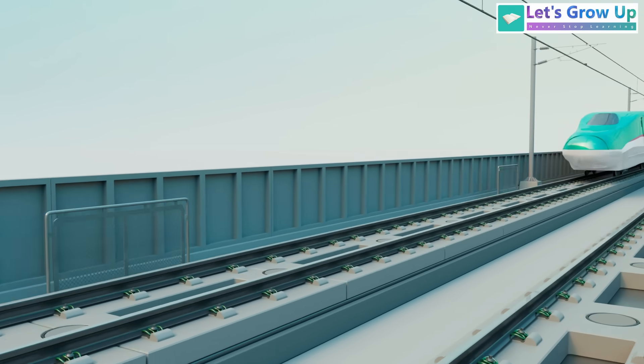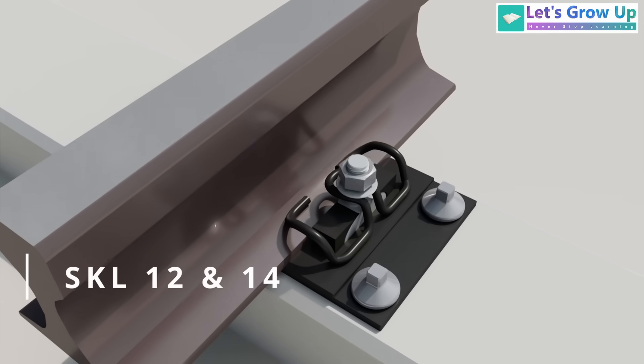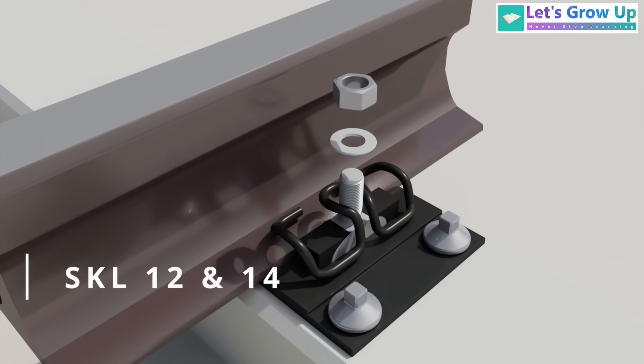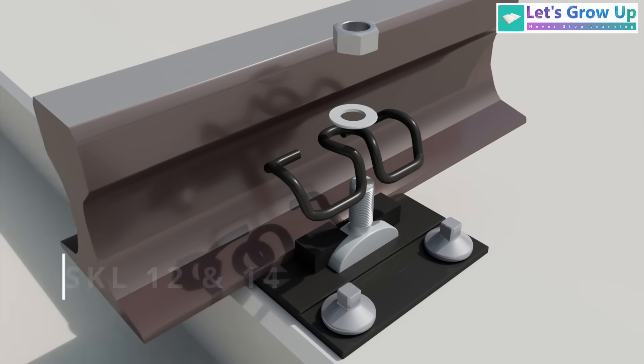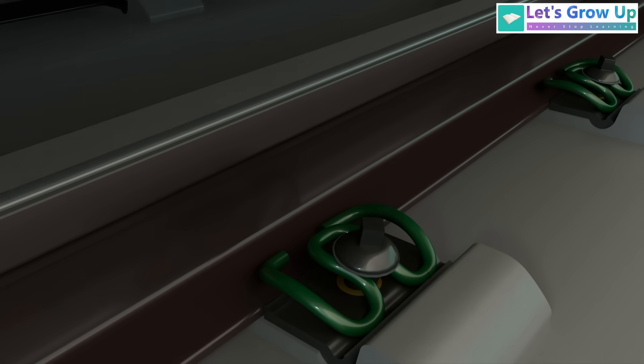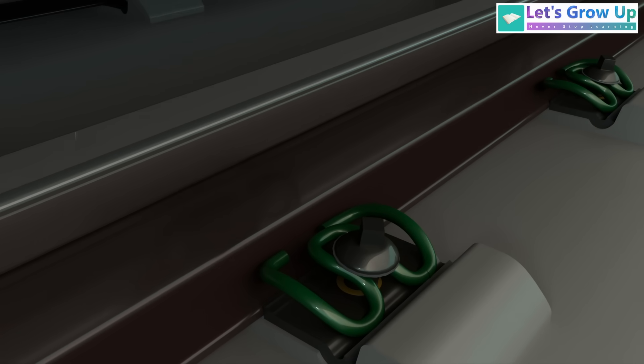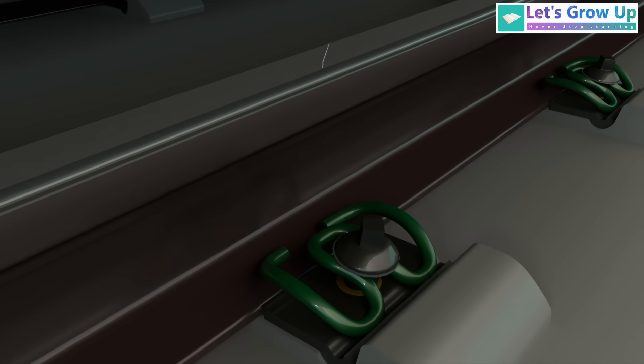These systems, such as the popular SKL 12 and SKL 14, secure the rail using a screw spike and a specialized angled guide plate, which is crucial for transferring lateral forces directly to the sleeper.